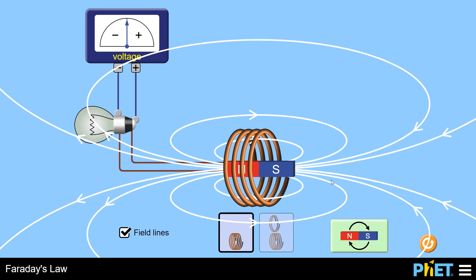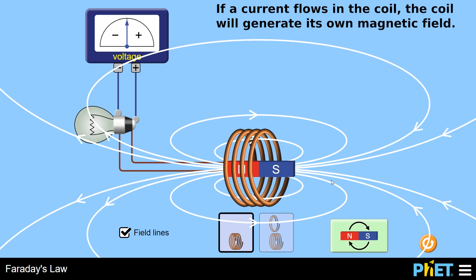And remember, when a current flows through a wire, then the wire itself will generate its own magnetic field. So that's a second magnetic field.